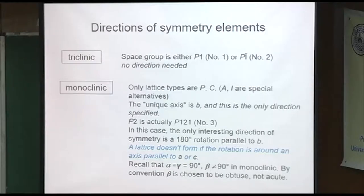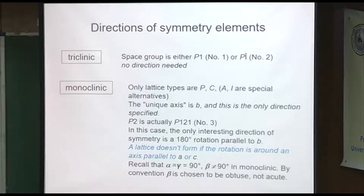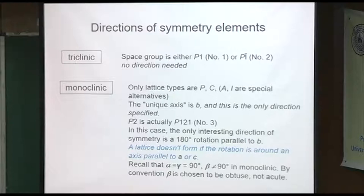In the space group tables, all space groups have numbers starting with the simplest: P1 is number one and P1-bar is number two — the only two triclinic ones. Tetragonal has many. Beta is chosen by convention to be obtuse — greater than 90 degrees — although it wouldn't fail if designated as less than 90 degrees, since they're basically the same.